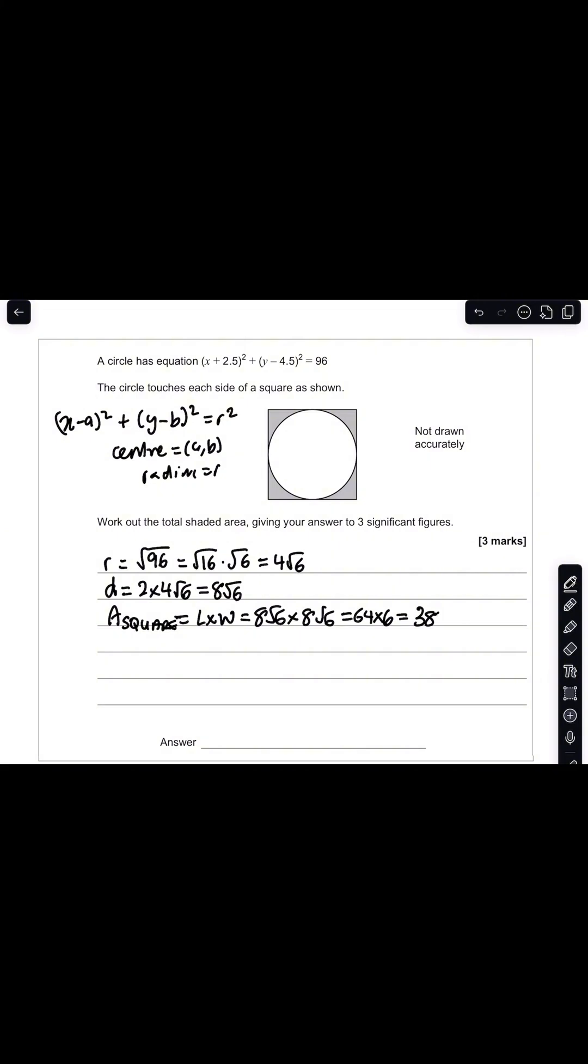That gives you 384 units squared. To obtain the area of a circle, we know the area of a circle is simply pi r squared. We know what r squared is. r squared is 96. So that's the same as 96 pi.